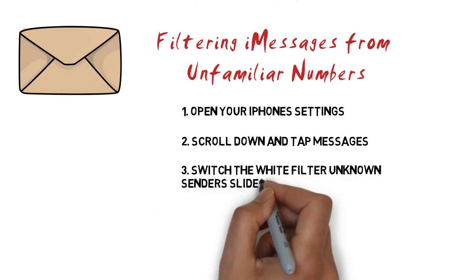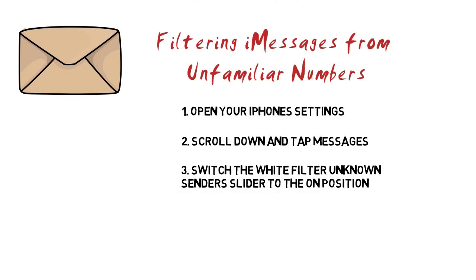Switch the 'Filter Unknown Senders' slider to the on position. The slider will turn green. Your iPhone will now separate messages from senders not on your contacts list into a separate tab in the Messages app. You'll see new tabs at the top: Contacts & SMS and Unknown Senders. You will not be notified of messages that go into the Unknown Senders tab.